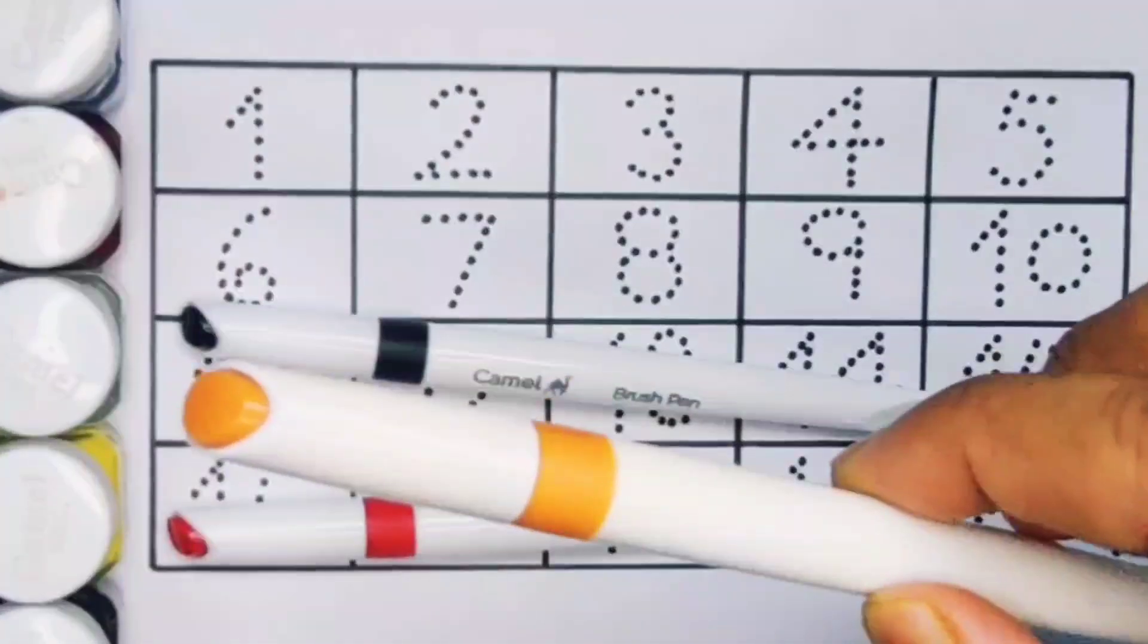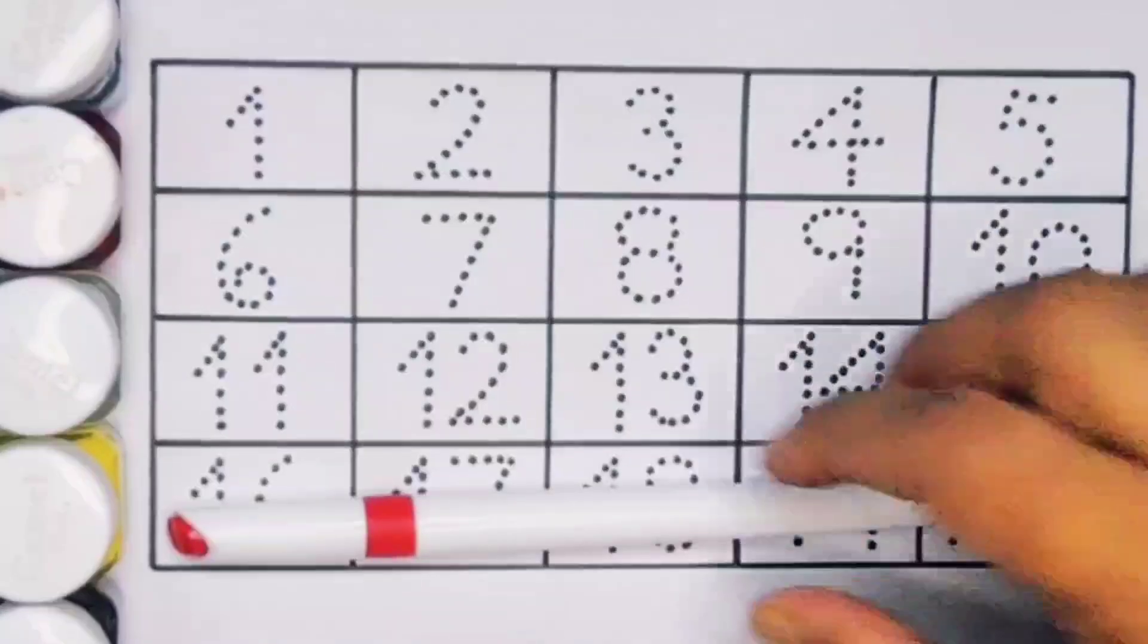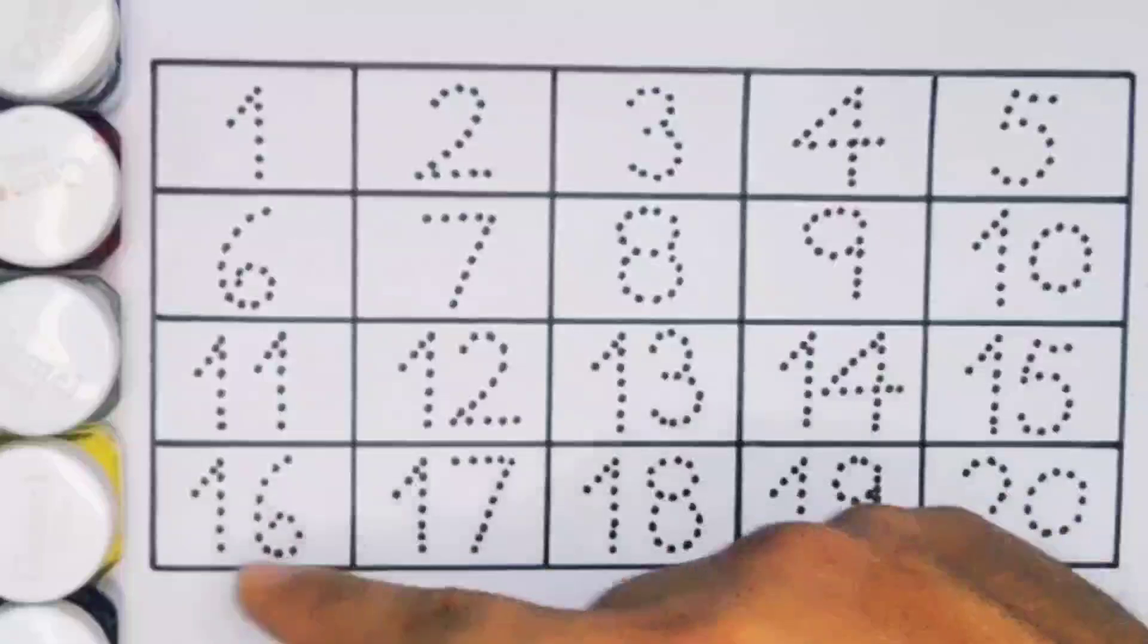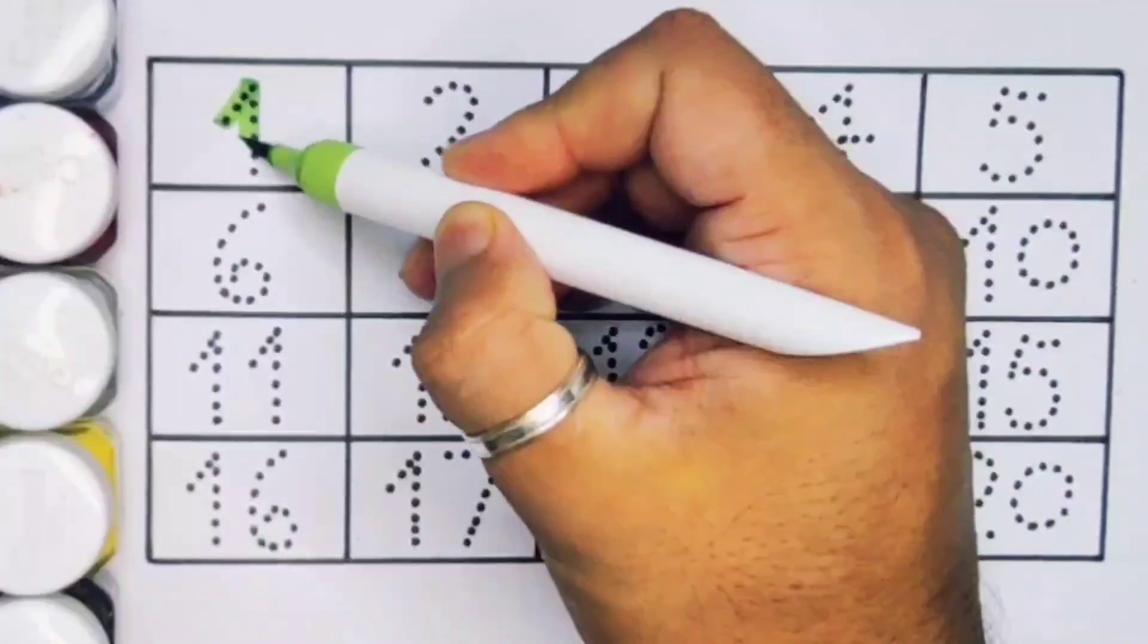Brown color, black color, and red color. Now let's learn the numbers counting 1 to 20. First, one, number one.